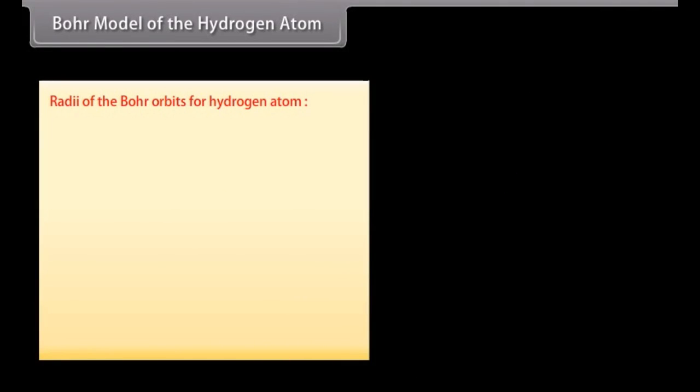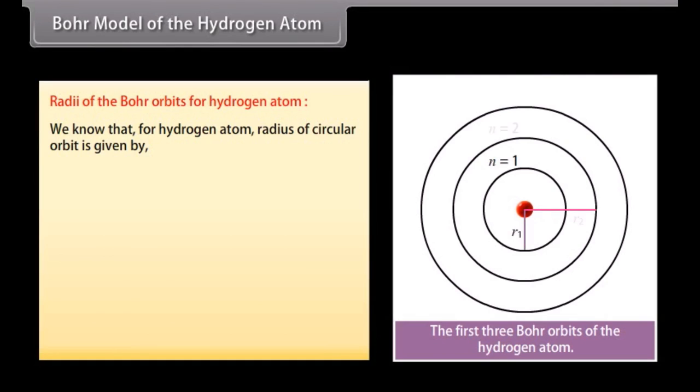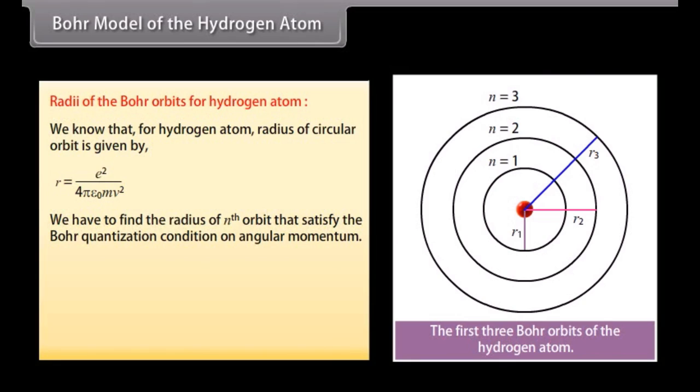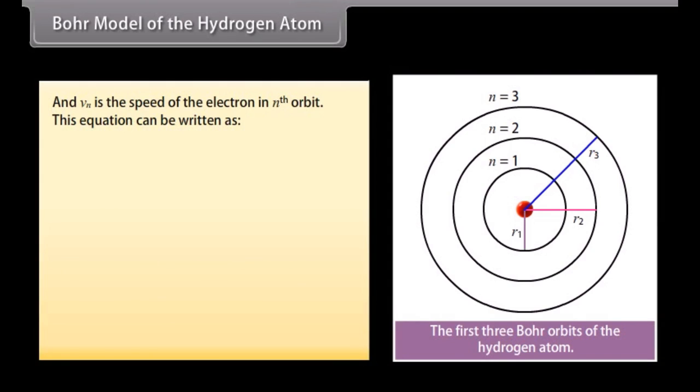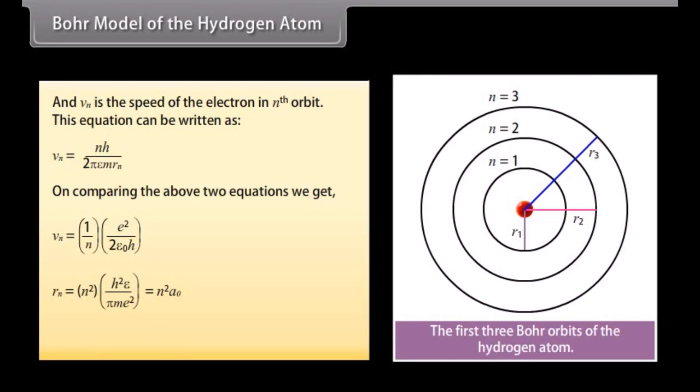Radii of the Bohr orbits of hydrogen atom. We know that for hydrogen atom, radius of circular orbit is given by E square upon 4 pi epsilon not MV square. We have to find the radius of nth orbit that satisfy the Bohr quantization condition on angular momentum. LN is equal to MVRN which equals to NH upon 2 pi where N is equal to 1, 2, 3 and so on and VN is the speed of the electron in nth orbit. This equation can be written as VN equals NH upon 2 pi MRN. On comparing the above two equations we get the expression of velocity and radius of nth orbit. VN equals 1 upon N multiplied by E square upon 2 epsilon not H and RN equals to N square multiplied by H square epsilon not upon pi M E square which equals N square A not where A not is equal to 0.529 angstrom.